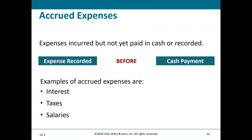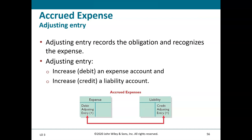Accrued expenses: expenses incurred but not yet paid in cash or recorded. The expense is recorded before the cash payment. Examples include interest, taxes, and salaries. The adjusting entry records the obligation and recognizes the expense: debit the expense account and credit a liability account to show the obligation to pay a vendor or outside entity.